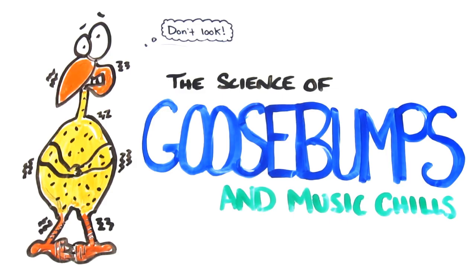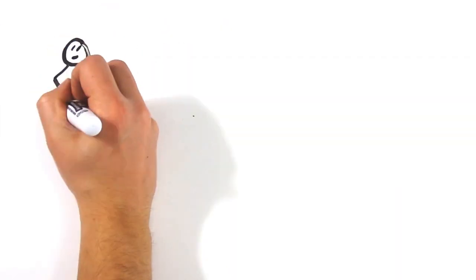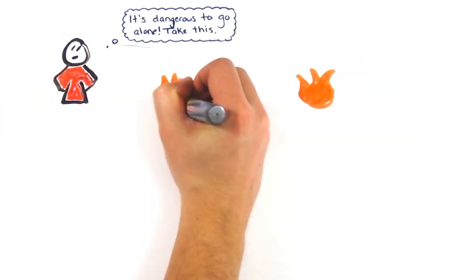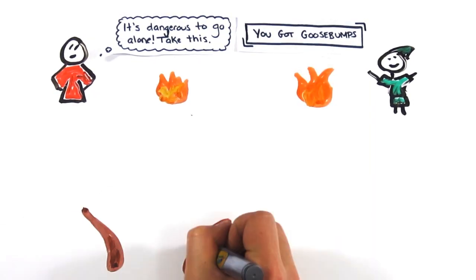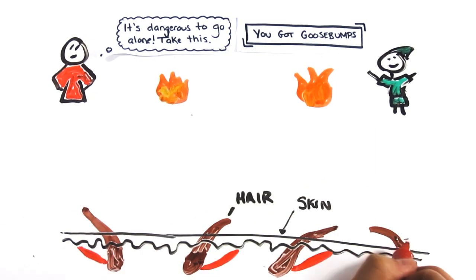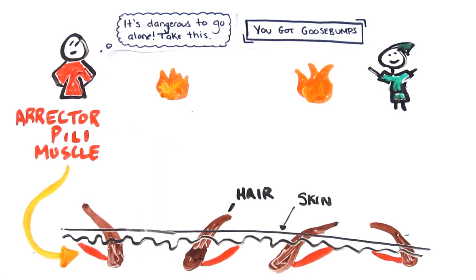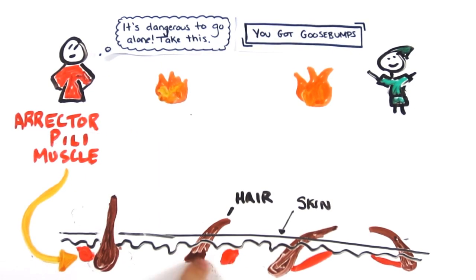Named after the way poultry looks when plucked, goosebumps are a fairly useless trait in humans which have been passed on by our ancestors. Each hair actually has a tiny muscle attached to it called the erector pili muscles, and when these muscles contract, the hair stands up on end.